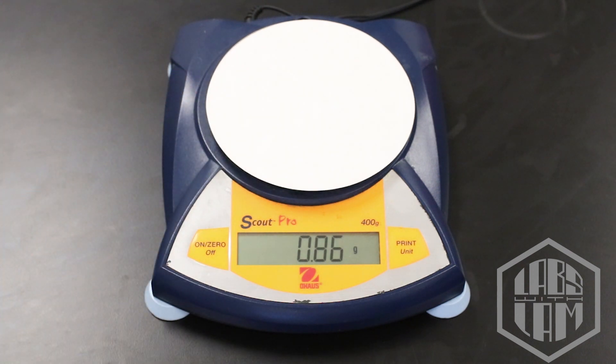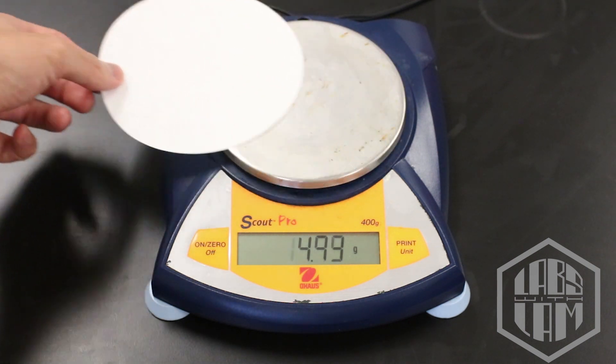First up is our dry filter paper. We're going to need this for later, so make sure you write the mass down in your observation table.